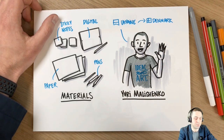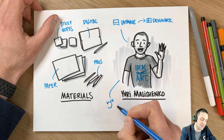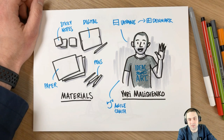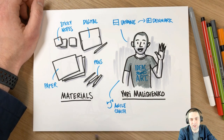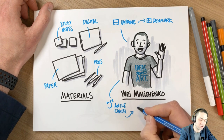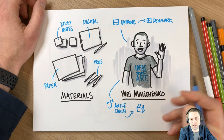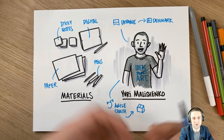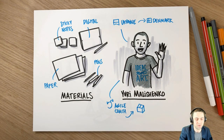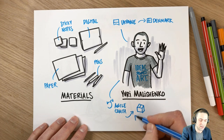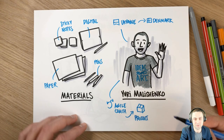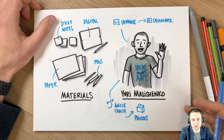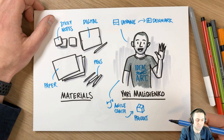In my job I am an agile coach, which means I help software development teams and organizations create better products — mobile applications, web applications, whatever technology you might be using on your smartphones or laptops to achieve your goals. I work for a bank and create products that solve problems for customers.